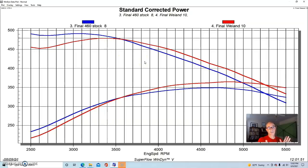You can see below 3500, the Weiand manifold actually lost torque compared to the factory intake, but improved it from 3500 out to 5500. So if you're thinking about that intake manifold upgrade, know that there is going to be a change.